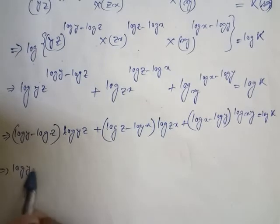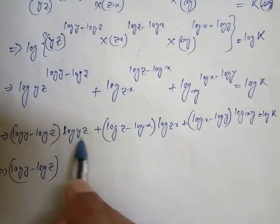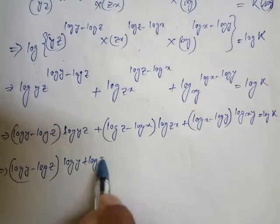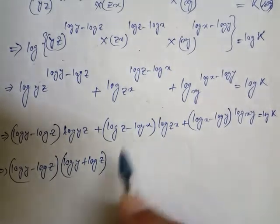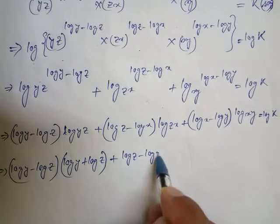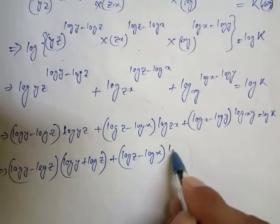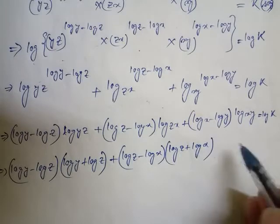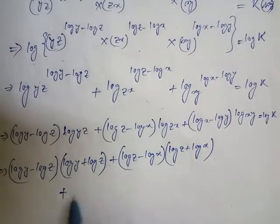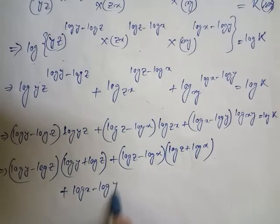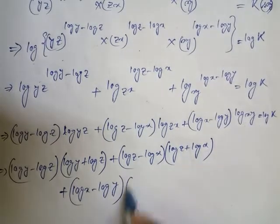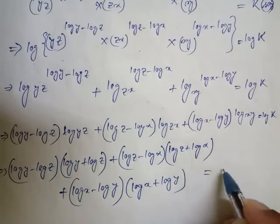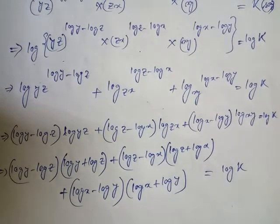Now, (log y minus log z) remains as is, but log(y·z) expands using log(m·n) = log m + log n, giving log y plus log z. Similarly, (log z minus log x) remains, and log(z·x) becomes log z plus log x. And (log x minus log y) remains, with log(x·y) becoming log x plus log y. This all equals log k.